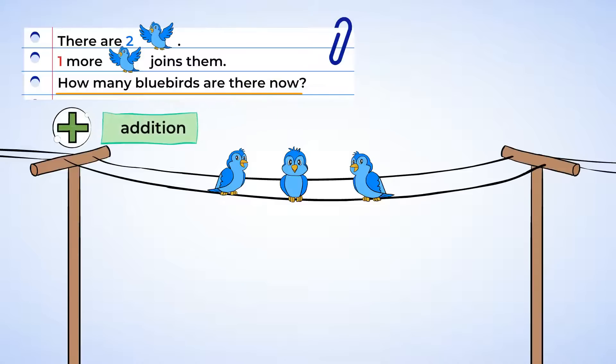Well, this is an addition problem. And you may wonder how you know. One clue is the word more in the problem. That means that we have to add. You can also think about what happened in the problem. We started with two bluebirds and one joined. So the number of bluebirds got bigger. And that means we need to add.